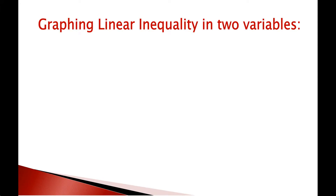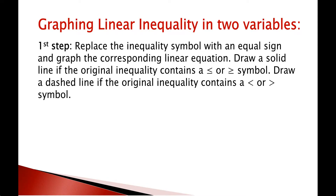To graph a linear inequality in two variables, in our first step, we replace the inequality symbol with the equal symbol, giving us the corresponding linear equation, whose graph is a straight line. If the original inequality contains less than or equal, or greater than or equal, then this straight line will be a solid straight line. But if it contains less than or greater than, then it will be a dashed straight line.